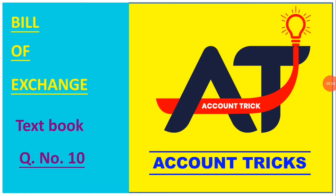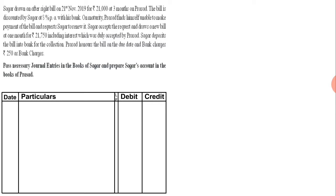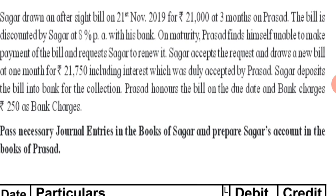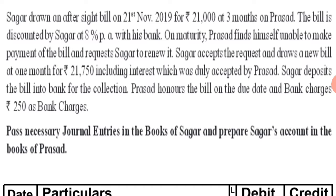Today we will solve Bill of Exchange textbook question number 10. Sagar draws an after-sight bill on 21st November 2019 for ₹21,000 at three months on Prasad. So on 21st November 2019, Sagar drew a bill on Prasad for ₹21,000. We need to solve this problem in the books of Sagar, who is the drawer, and Prasad is the drawee.